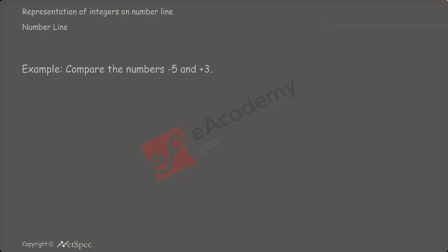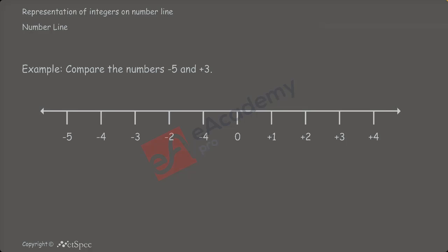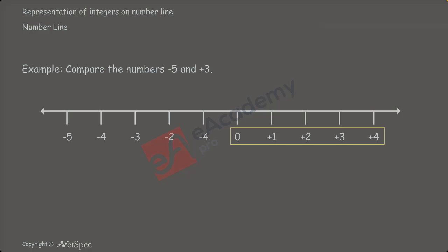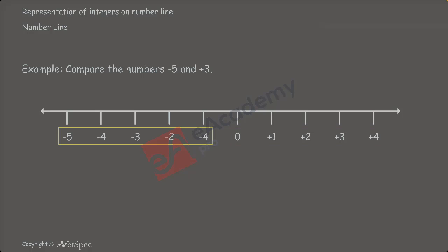For this, let us make the number line. Draw a straight line with equidistant marks. Mark zero in the middle, and mark the given numbers plus 3 and minus 5 on their appropriate positions. If we observe these two numbers on this number line, we can see that the number plus 3 is towards the right of the number minus 5. And we know that the number which lies towards the right is always of greater value than the number that lies to the left.